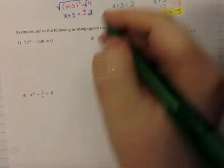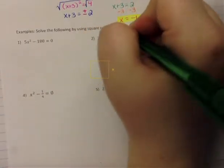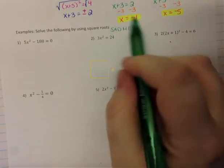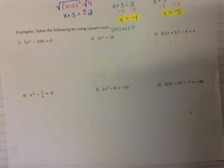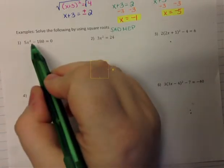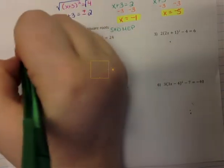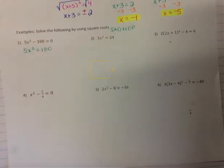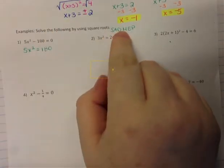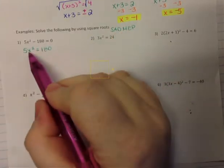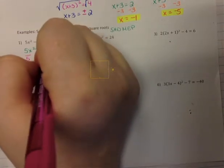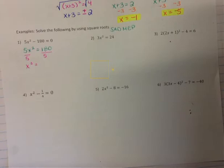When I'm solving by square roots, I'm doing SADMEP, which is order of operations backwards — PEMDAS backwards. So I have to add and subtract away from the x first. On this one, I want to add the 180 over, so I have 5x² equals positive 180. Now I want to multiply or divide away from the x. I have a 5 attached to it, so I divide both sides by 5. I end up with x² equals 36.